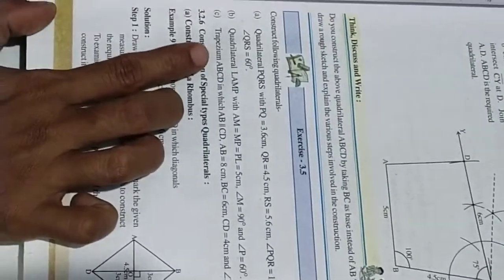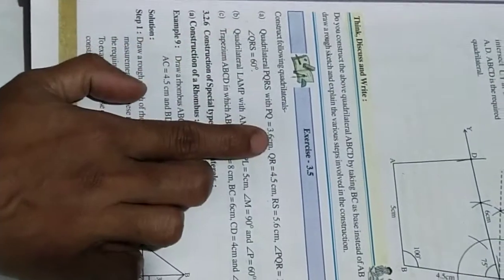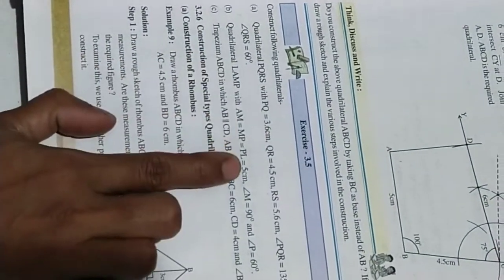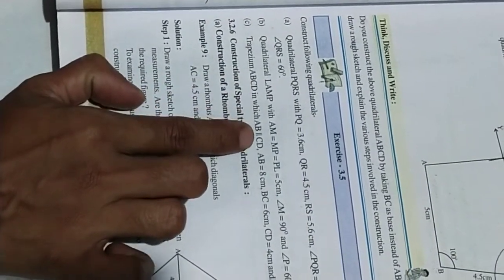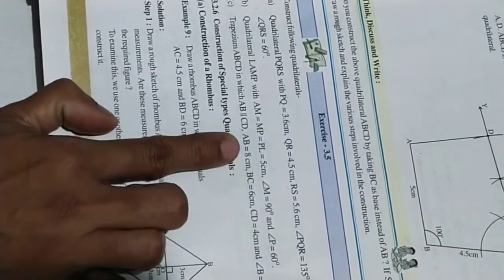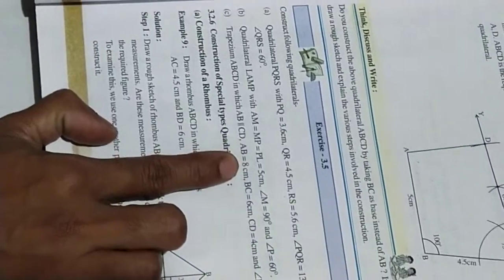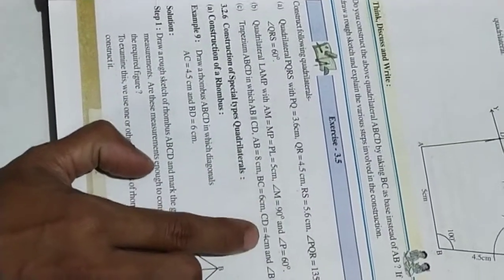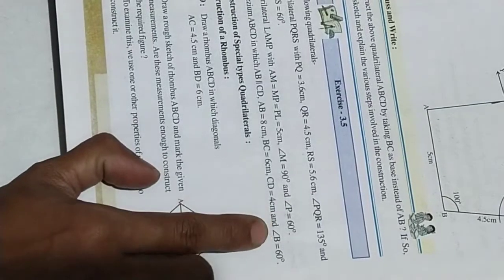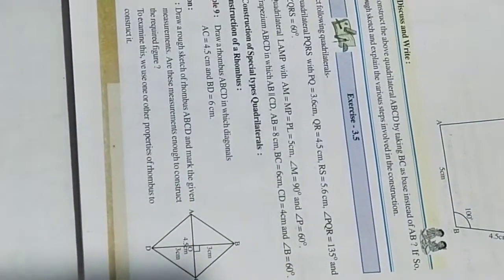Students, we will go to Exercise 3.5. The first sum is already completed, and the second sum was given as homework. See the third sum: Trapezium ABCD in which AB is parallel to CD. AB equals 8 cm, BC equals 6 cm, CD equals 4 cm, and angle B equals 60 degrees.